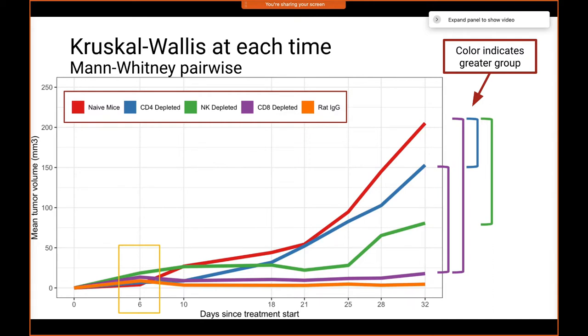One of the first things the Heitchin paper from 1993 looked at was Kruskal-Wallis at each time point. If we look at days 18 through 32, we get that CD4 depleted is greater than the lower groups, and naive mice are greater than those three lower groups as well — that seems like a fine conclusion. But if we actually followed the method as the paper set it up, we would stop at day six, where we'd find significance with the Kruskal-Wallis test, and the results are very different from the end of the study. You might think that's obvious, but how do you know to stop at day 32 and not day 90?